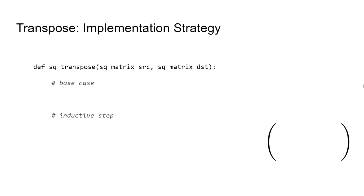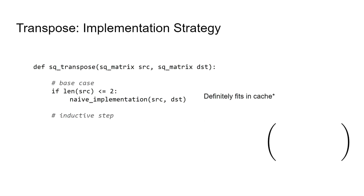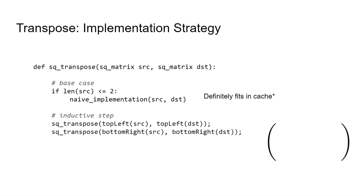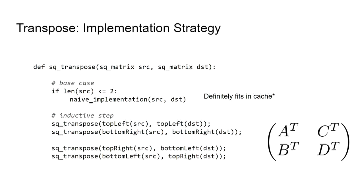Now we'll look at the implementation strategy. For a base case — some very small matrix size, for example a two-by-two matrix — we can use the cache-naive implementation and apply that to the source and destination matrices. The smallest case will definitely fit into the cache on virtually any system. For the inductive step, we look at each corner of the result matrix and put the transpose of the corresponding corner of the source matrix. We recurse, applying the transpose on a much larger matrix down to smaller independent sub-problems, which can be computed without needing to know of each other's cache usage.